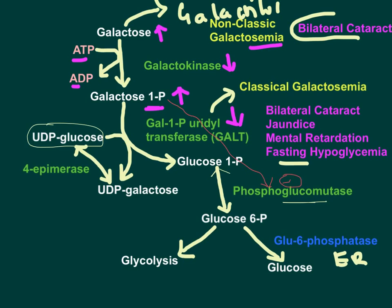Another sign in classical galactosemia is bilateral cataract. When ATP levels are low, conversion of galactose to galactose-1-phosphate slows, causing galactose to accumulate. Some of that galactose is diverted into galactitol formation. Galactitol accumulates in the lens, causing bilateral cataract — the same mechanism seen in non-classic galactosemia.